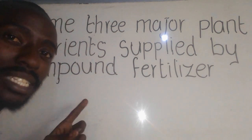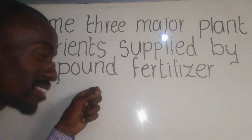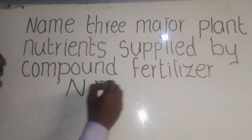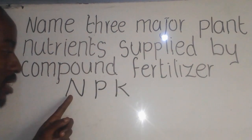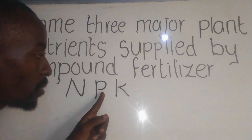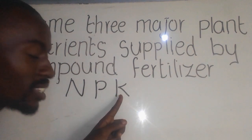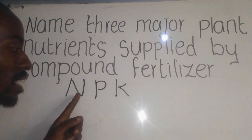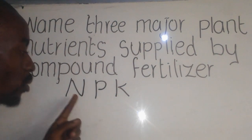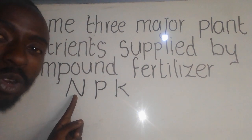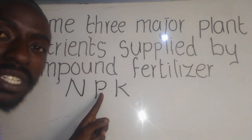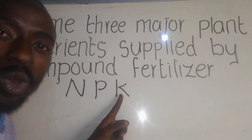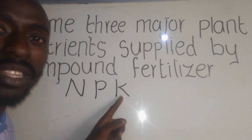Which elements are we talking about here? Because the same elements are the answers. We are talking about N, P, K. N stands for nitrogen, P stands for phosphorus, and K stands for potassium. Nitrogen helps in the formation of chlorophyll. Phosphorus helps in cell division. Potassium helps in increasing the growth of the roots of the plant.